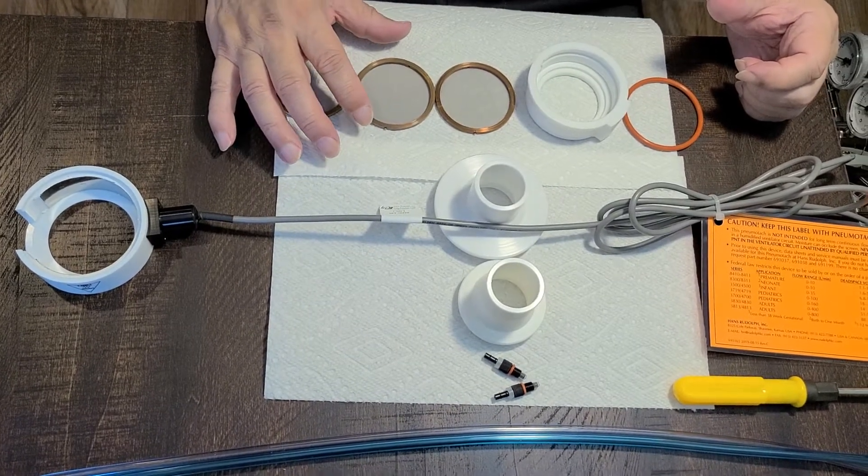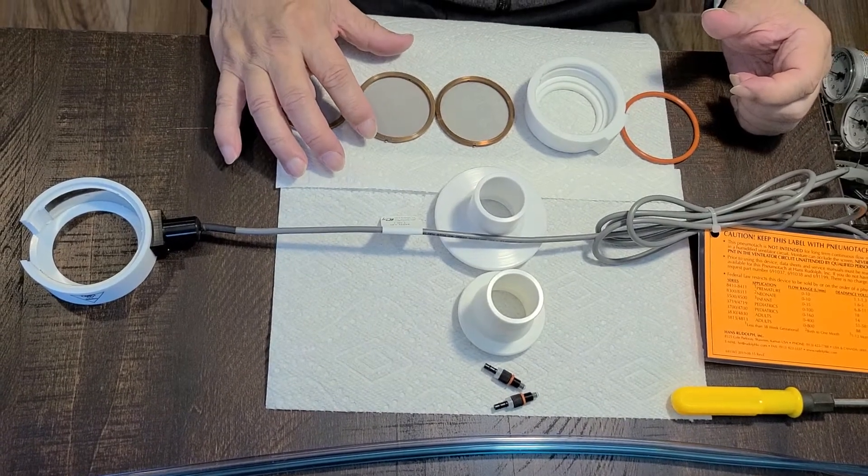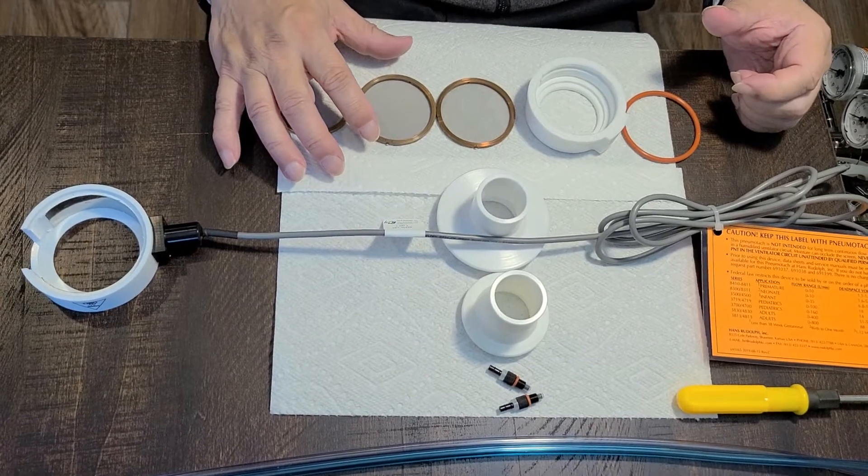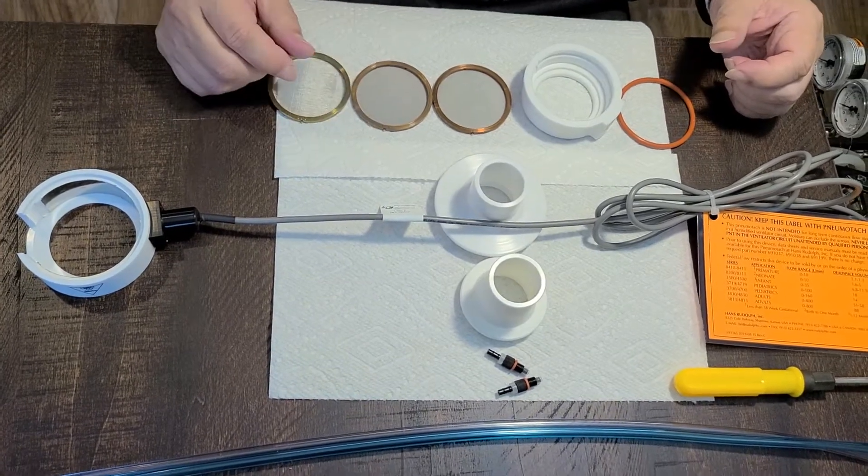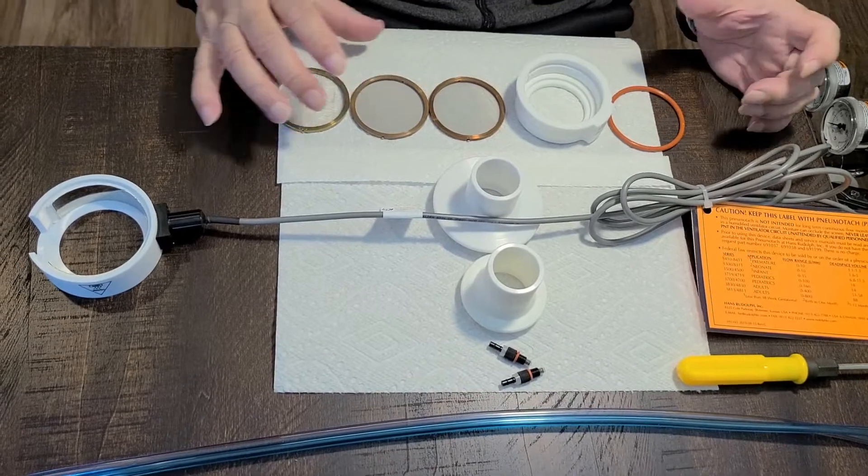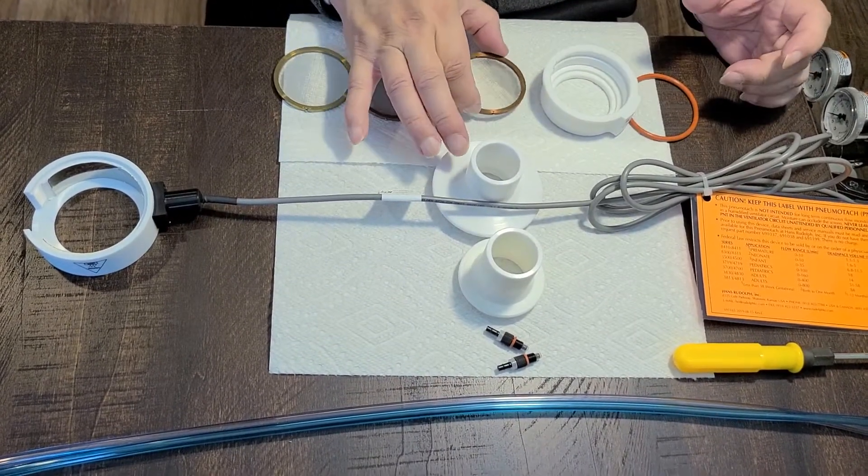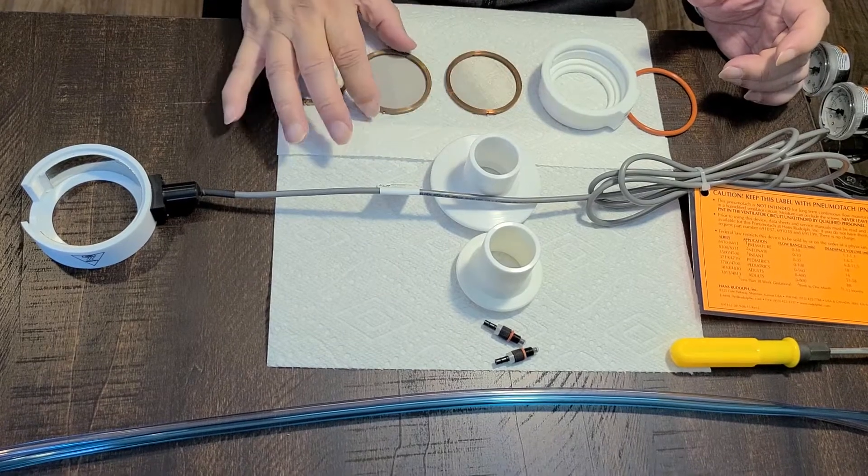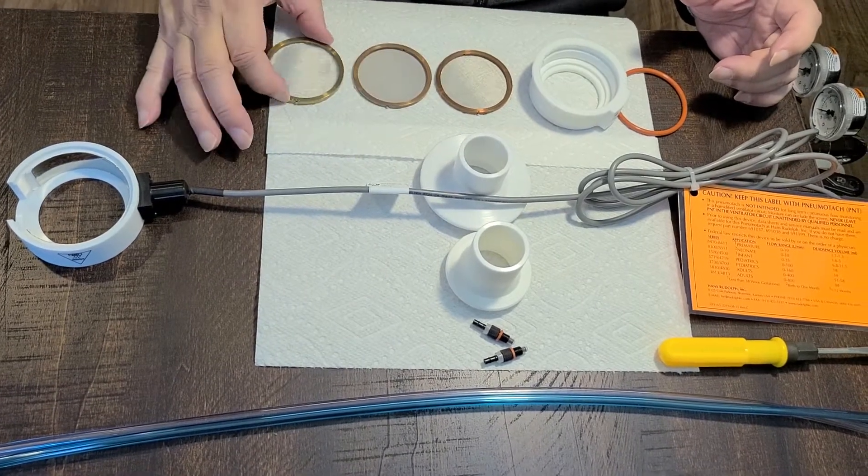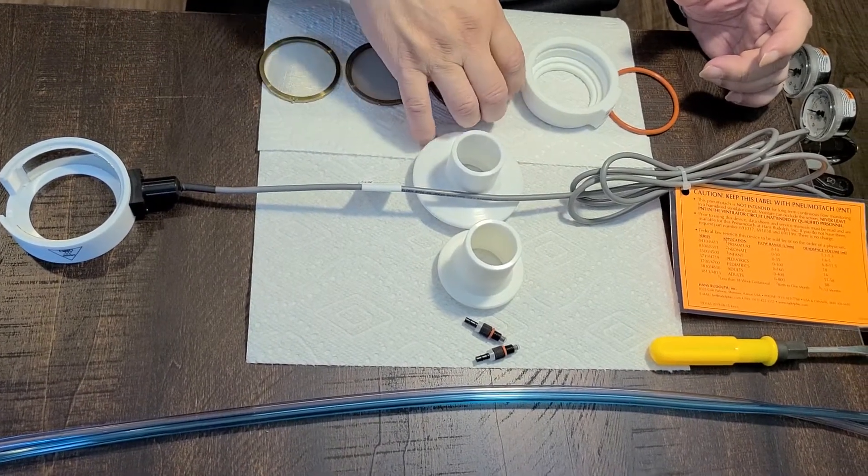Moisturizer will seal the screen and increase the resistance. And you don't have your flow care value anymore. After you finish cleaning it, we use white paper towel to absorb the water on the screen.